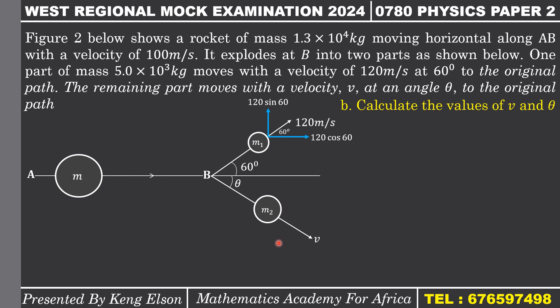For velocity v, it also has a horizontal and a vertical component, where the angle made by v with the horizontal is theta. So the horizontal component is v cos theta, while the vertical component is v sin theta. We are now going to apply the principle of conservation of linear momentum to both the x-axis and the y-axis.